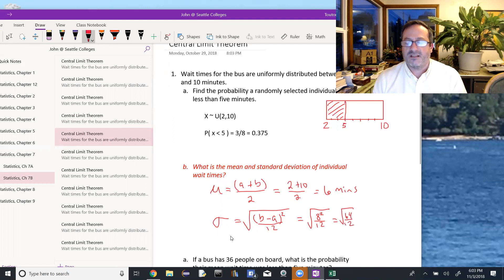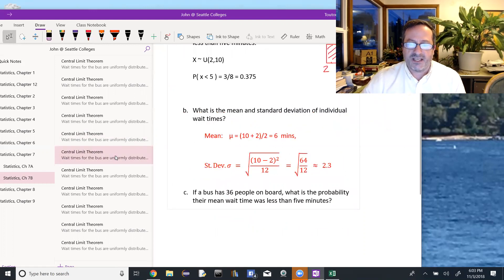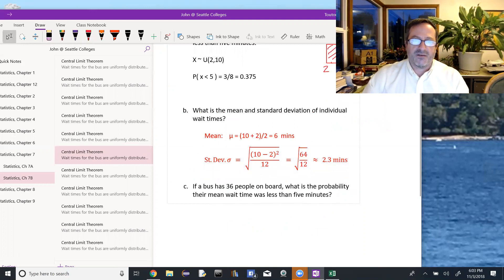When I do my computations in Excel, I will probably leave that as the square root of 64 over 12. But to get an idea when I draw my picture for the next part, I want to estimate that, and that's approximately 2.3 minutes. So both the mean and the standard deviation have the same units as our random variable x. The mean is 6 minutes, and the standard deviation is approximately 2.3 minutes.